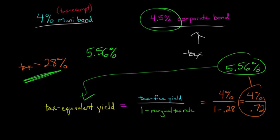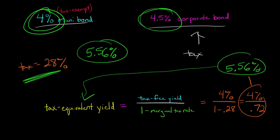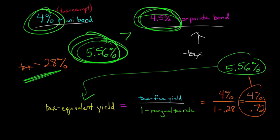The municipal bond gives you a higher after-tax return. Even though it's 4% instead of 4.5%, this 4% tax-free gives you the same return as 5.56% not tax-free. Since you're only getting 4.5% not tax-free, and you have an equivalent of 5.56% tax-free, the municipal bond has the higher after-tax return.